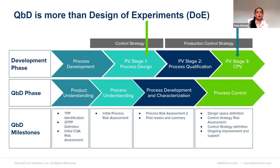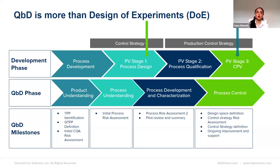Quality by Design was designed to help you manage your process development as required by ICH QA, where you should start with the end in mind and build process understanding and process control as you execute your development activities. This is something that obviously can't be done with design of experiments alone. Once you've decided on your API and gained some product understanding through these milestones, you can select your process and begin designing it, building quality into it in parallel rather than at the end of the line, which is Quality by Testing. This is where DOE comes into the picture. To summarize, DOE is an element of your QBD strategy, but not the only part of it.